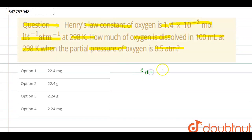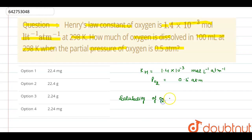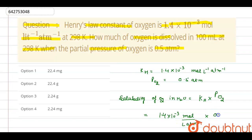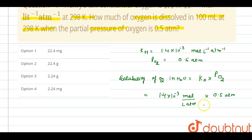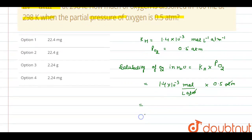So basically here, Henry's law constant is given as 1.4 × 10⁻³ mol per litre per atmosphere, and the partial pressure of oxygen dissolved is given as 0.5 atmosphere. Now we can find out the solubility of oxygen dissolved in water. It will be equal to Henry's constant × partial pressure of oxygen: 1.4 × 10⁻³ × 0.5 atm. Atmosphere cancels out, and when we solve this, the value comes out to be 0.7 × 10⁻³ mol per litre.